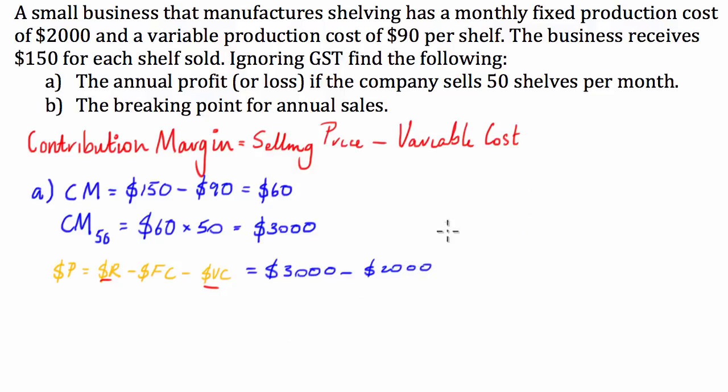Now, where I would see people coming unstuck in this question is after we provide this number of $1,000 a month, we're not going to quickly check and see that the question is asking for annual profit. So, a simple mistake, like a mistake that can be changed quite quickly, but you're going to lose a lot of marks for not reading the question correctly.